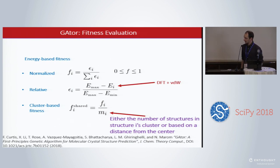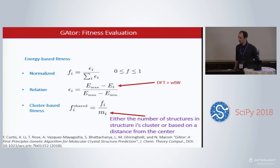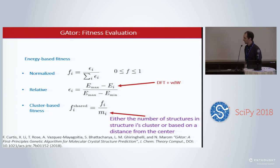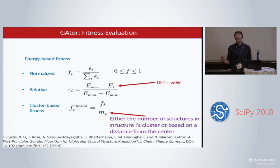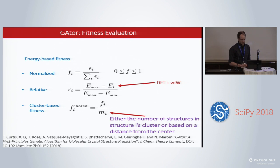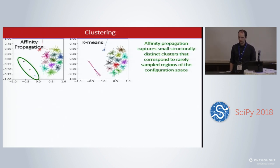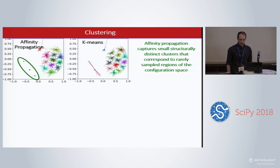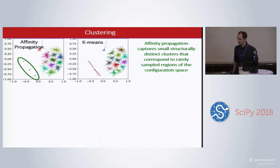One way to address that which we have developed is to introduce a cluster-based fitness function. It could be as simple as dividing by an attribute of clusters of structures — for instance, the number of structures in structure i's cluster, or a distance from the center of that cluster. We use unsupervised machine learning; specifically, we have affinity propagation and k-means.